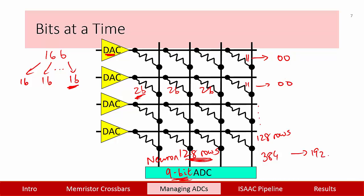This allows us to bring the ADC resolution down from 9 bits to 8 bits. This seemingly simple change can reduce total chip power by 1.5x, because the ADCs are such high overhead.